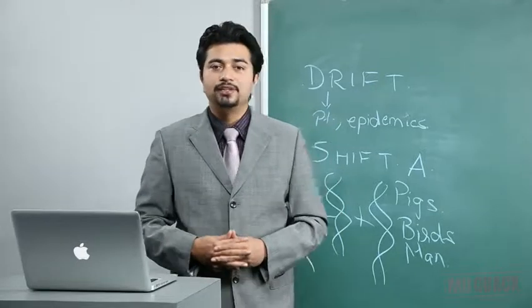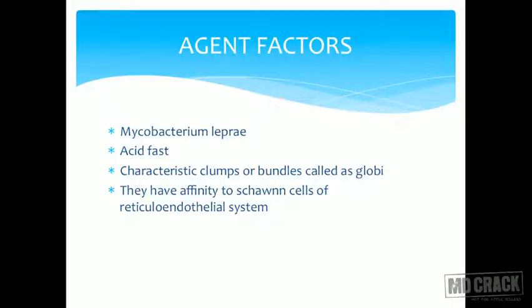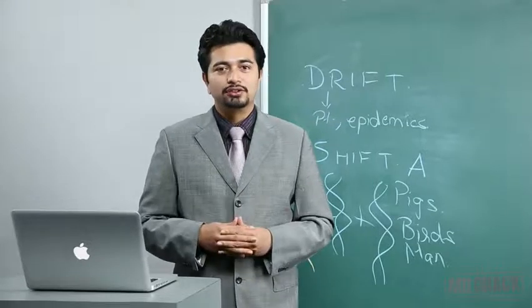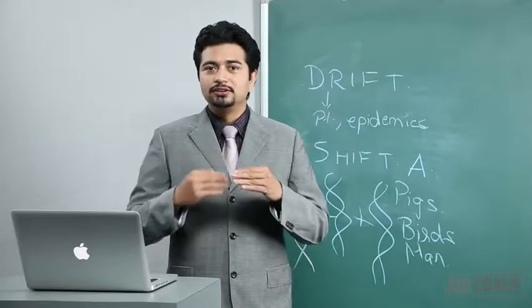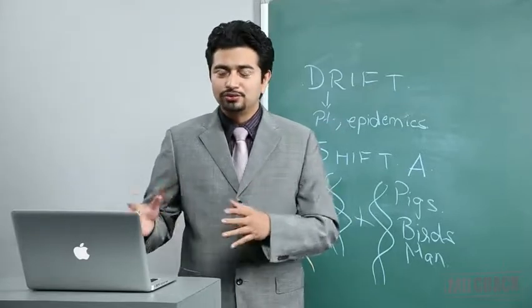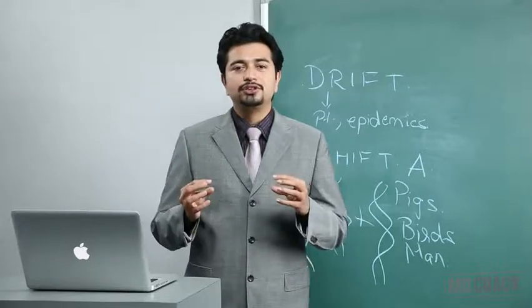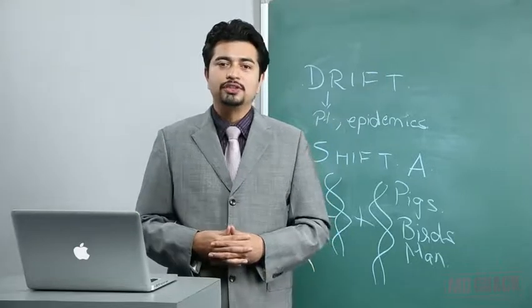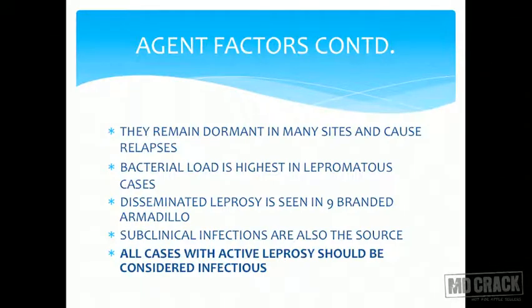Schwann cells provide insulation to axons and help with conduction. Mycobacterium leprae is attracted to Schwann cells, disrupts them, disrupts conduction, and causes neurological problems. Like tuberculosis, leprosy can remain dormant in many sites and cause relapse. Bacterial load is highest in lepromatous cases and least — or absent — in tuberculoid cases.